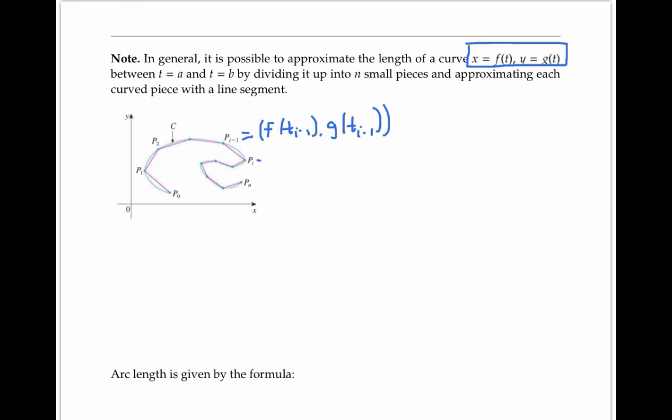And similarly, p i is going to be x coordinate f of t i, y coordinate g of t i. If we think of t as time, then this is just saying that t sub i is the time at which we get to point p sub i.